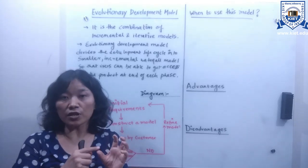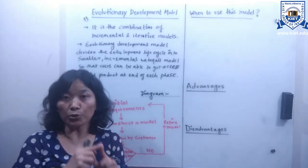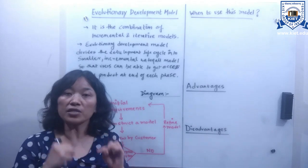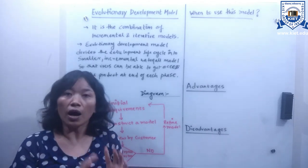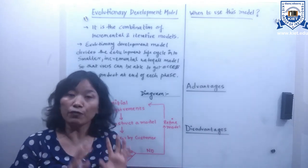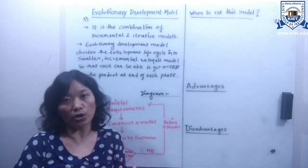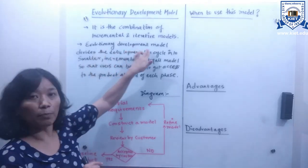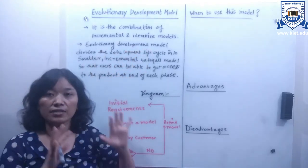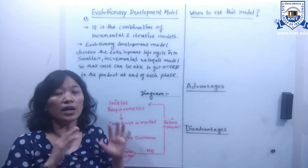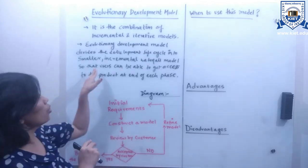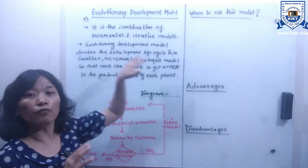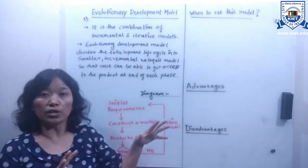As I have discussed, the prototype and spiral models are also a kind of evolutionary model. This evolutionary development model basically divides the development lifecycle into smaller, incremental waterfall models.